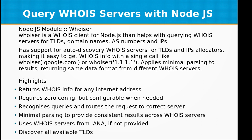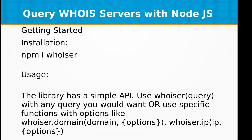It applies minimal parsing to results, returning the same data format from different WHOIS servers. Some highlights of this module: it returns WHOIS info for any internet address, requires zero config but is configurable when needed, recognizes queries and routes requests to the correct server, has minimal parsing to provide consistent results, and uses WHOIS servers from IANA — or if not provided, discovers all available TLDs.